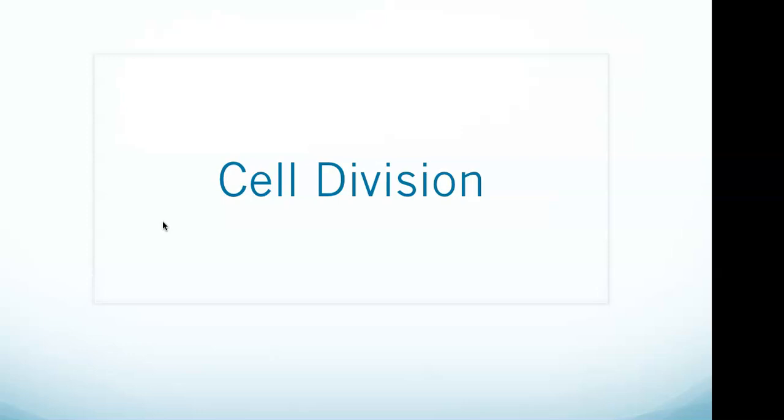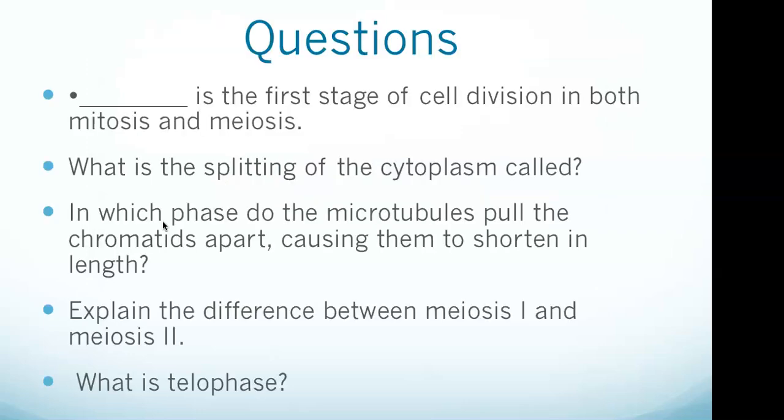This video is on cell division. We've got five questions, and these questions will show up again at the end of the video so you can try to answer them yourself. The questions are: What is the first stage of cell division in both mitosis and meiosis? What is the splitting of the cytoplasm called? In which phase do the microtubules pull the chromatids apart, causing them to shorten in length? What are the differences between meiosis 1 and 2? And what is telophase?